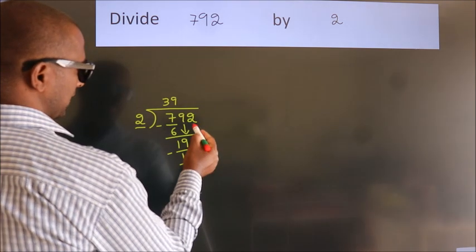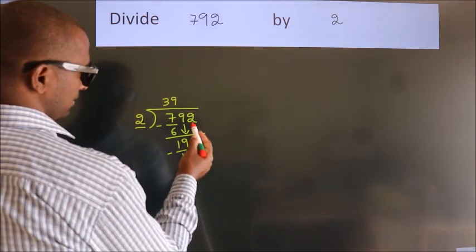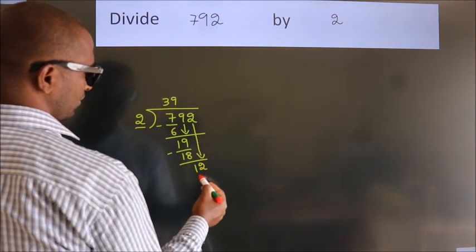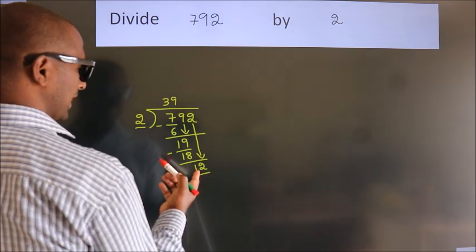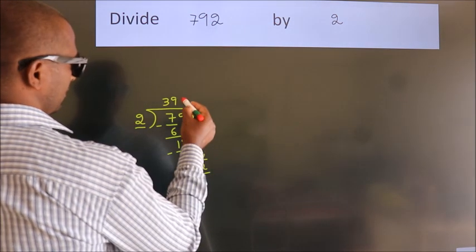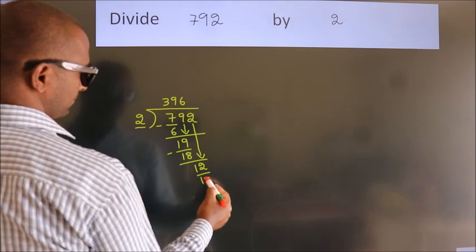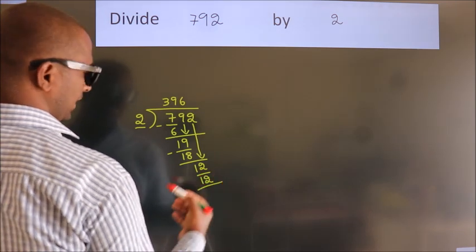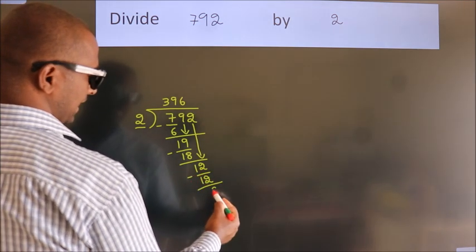After this, bring down the beside number. So, 2 down, so 12. When do we get 12? In the 2 table: 2, 6, 12. Now we subtract. We get 0.